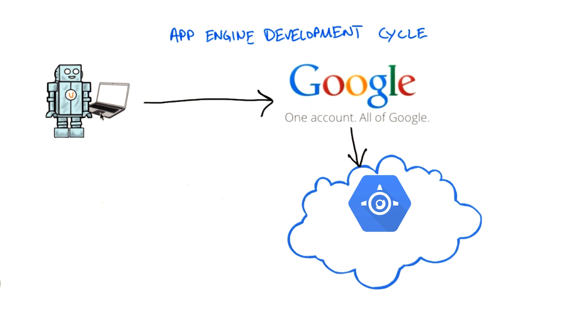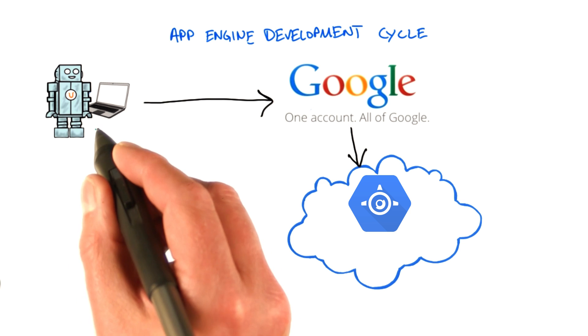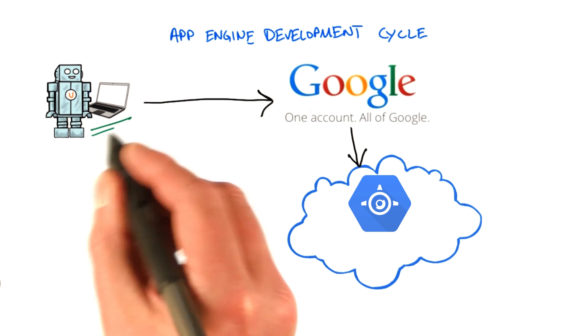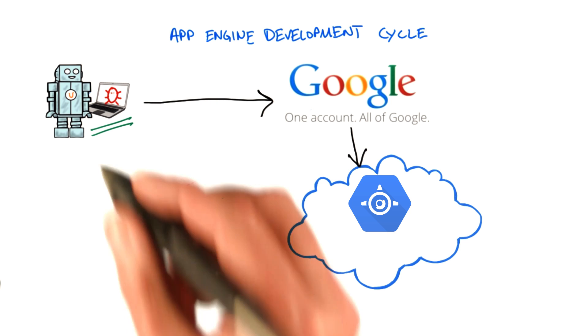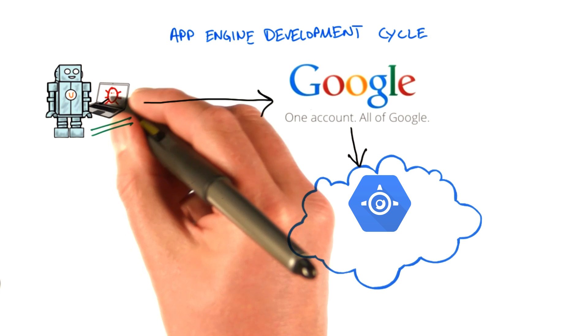Then you can fire up an instance of App Engine, which runs on your local development machine. And that is, of course, great, since it allows you to use all your standard tools, such as debuggers and profilers, to get those bugs out.